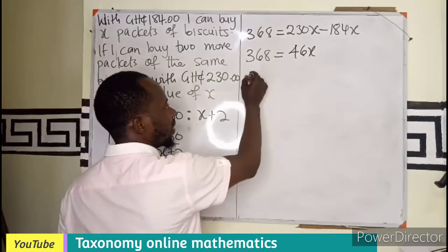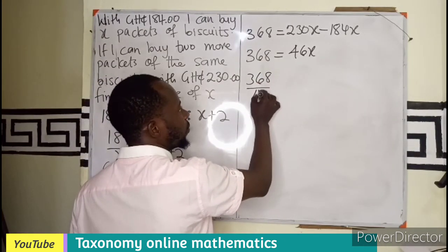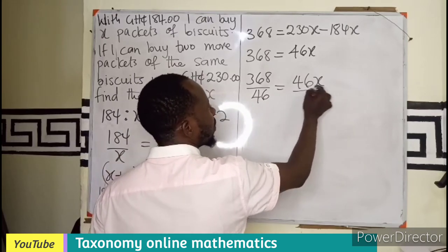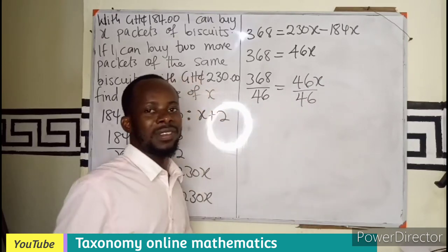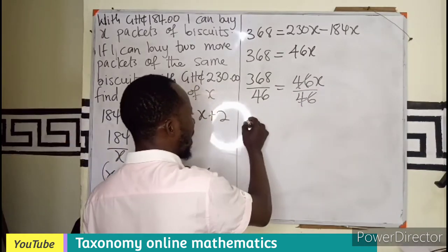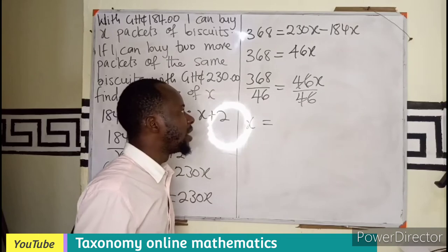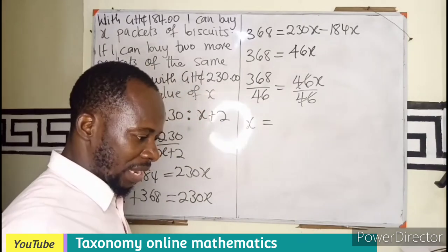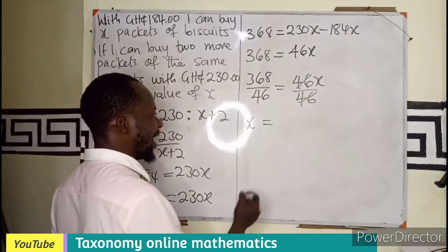But we are looking for X. So in this case, 368 over 46. 46X over 46. By cancellation, we cancel this. It means our X is going to be 368 divided by that, and that will give us 8.